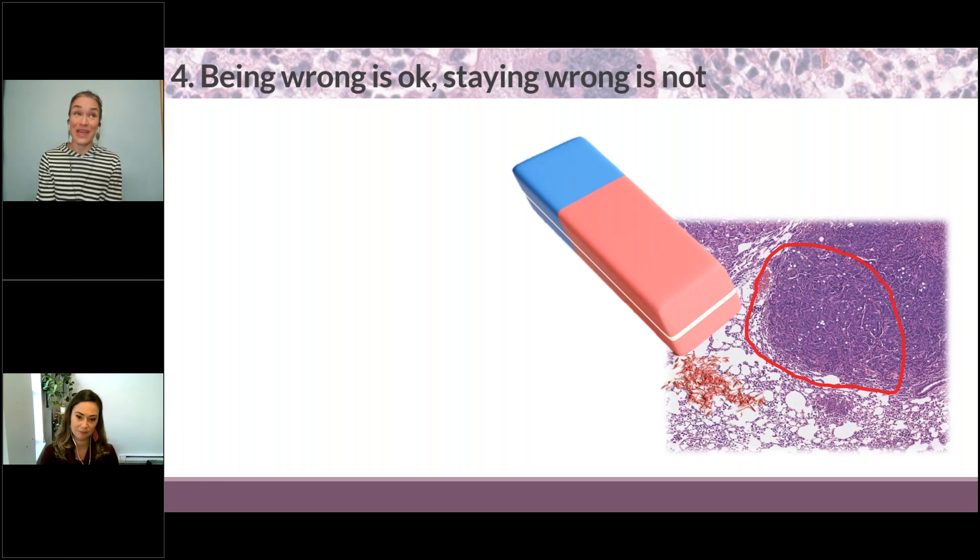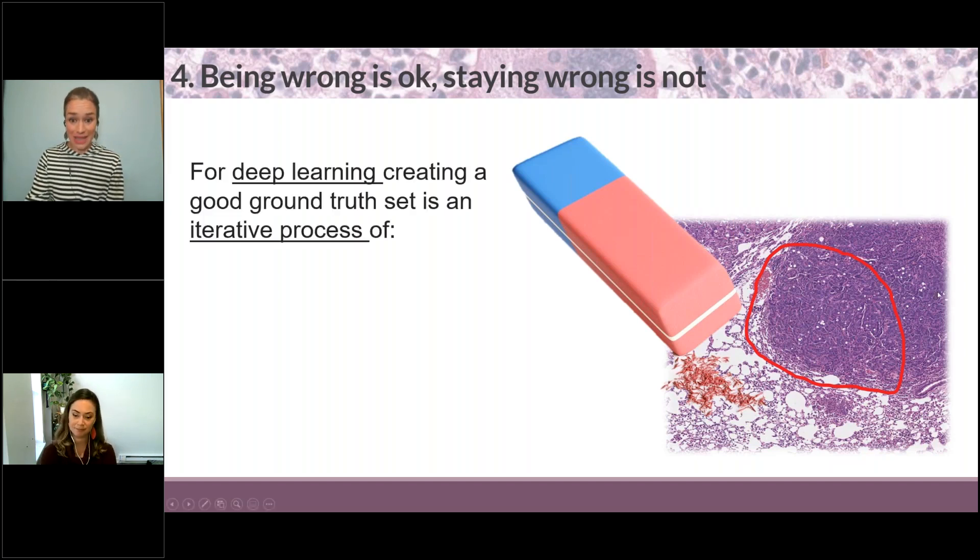I would have spared myself a couple of arguments in meetings where I thought, no, this is the way you should annotate and you should agree at the beginning and then stick to it. It's just not the case with deep learning. And it's okay because you don't have to annotate correctly from the get-go, but you should not stay wrong.